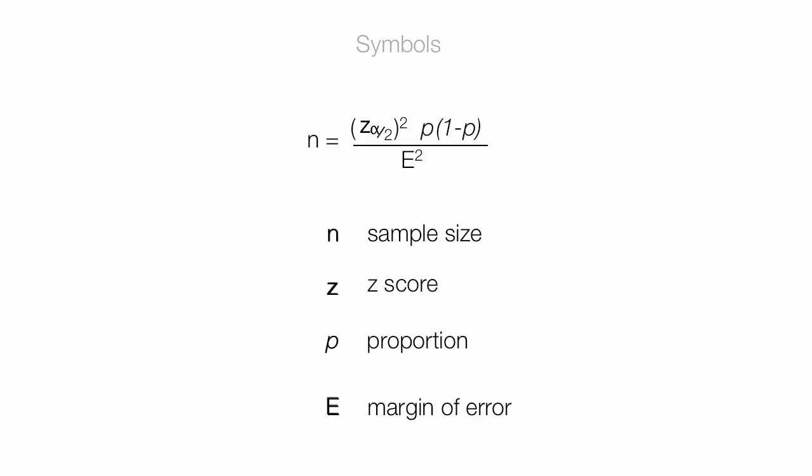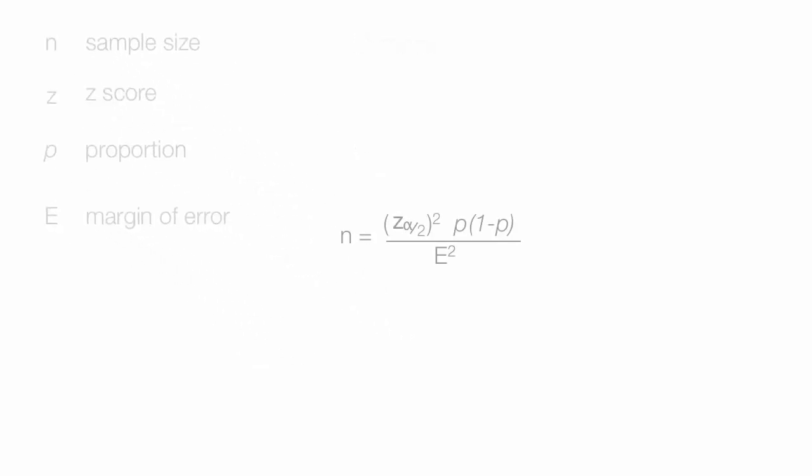Notice the standard deviation is not included in this equation. I'm going to assume a confidence level of 1.96, which is the 95% confidence level, a proportion of 0.25 and a margin of error of 0.025.